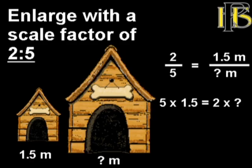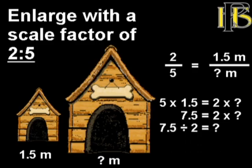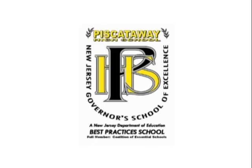Cross products, set them equal to one another, then go ahead and divide both sides by 2, and I find that my unknown length is 3.75, making the width of my enlargement 3.75 meters. And you can use this on all dimensions. You can use it on the height, and even on a three-dimensional shape, you can use it as the depth.